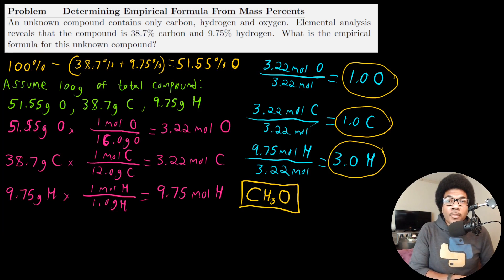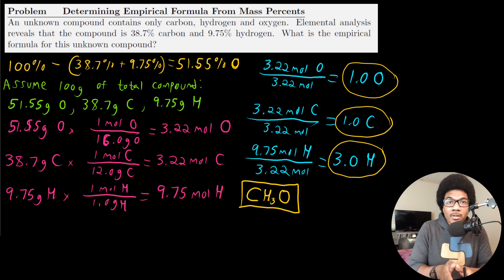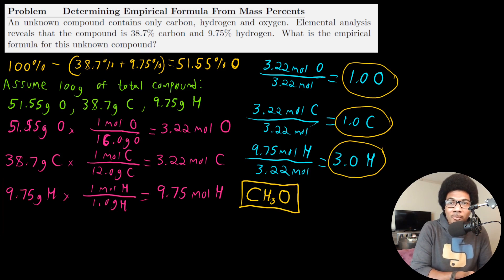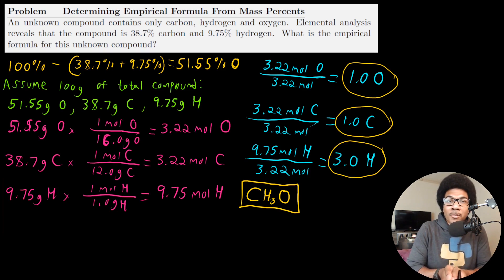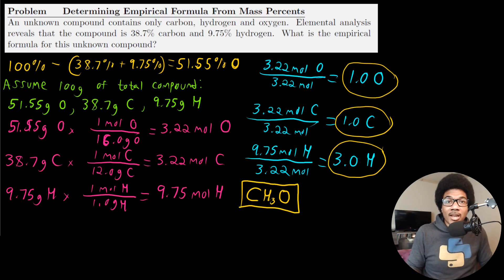Those are a few examples of how to calculate the empirical formula from experimental data. In the next video, I'll show you how to take this empirical formula and use it to determine the molecular formula for a compound. The empirical formula is really just a stepping stone to get to the molecular formula that we're oftentimes most interested in.